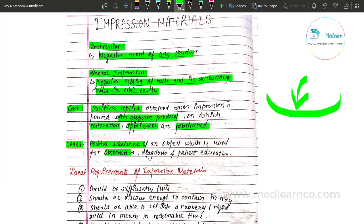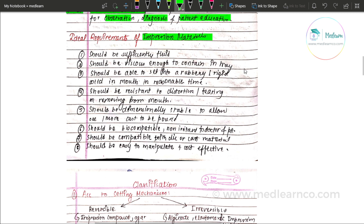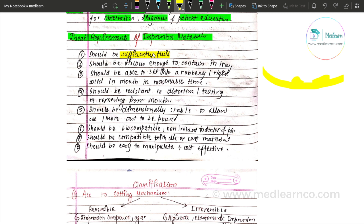Now, the ideal requirements of impression materials: first, it should be sufficiently fluid so that it can capture certain details. The impression material has to be fluid enough to record fine surface details.